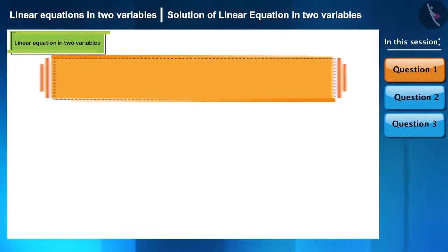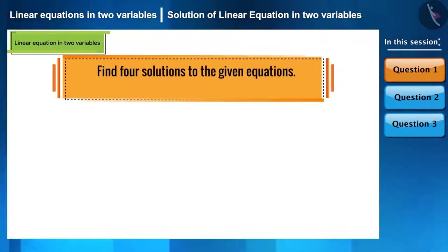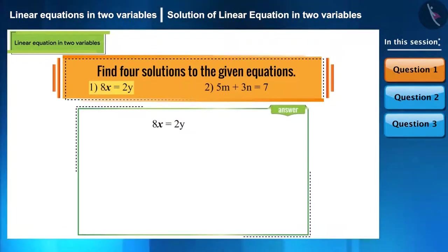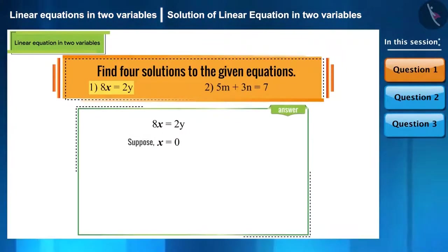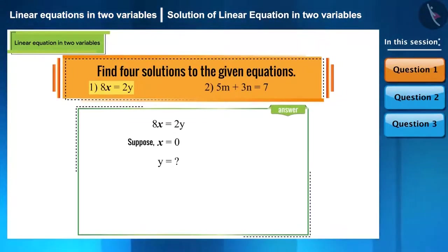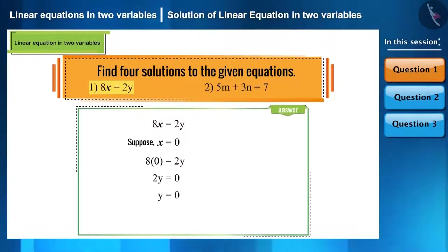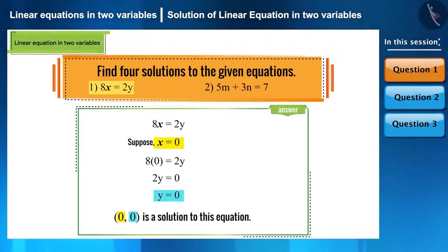Find four solutions to the given equations. Let's take the first equation: 8x is equal to 2y. A simple way to find the first solution is to assume x as 0 and find the corresponding value of y. Substituting x as 0 gives y as 0, hence (0, 0) is a solution to this equation.